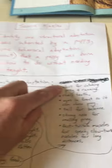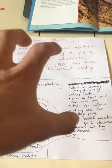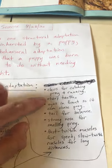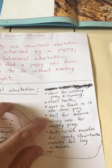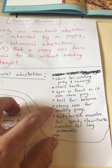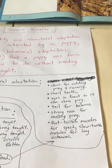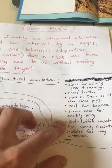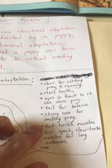Structural adaptations are changes to body parts — physical changes to the body parts of that animal. For a puppy, structural adaptations include their claws for catching prey and running; they have long, sharp claws that dig into the ground so they can move faster. Another structural adaptation is their sharp teeth. They have eyes in the front of their head to chase prey, a tail for balance that allows them to run and move quickly, and a strong nose for smelling prey. My dog can smell an animal from a couple hundred yards away. They also have fast-twitch muscles for speed and slow-twitch muscles for running long distances.